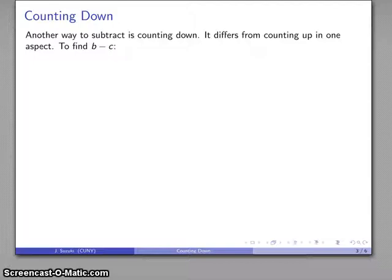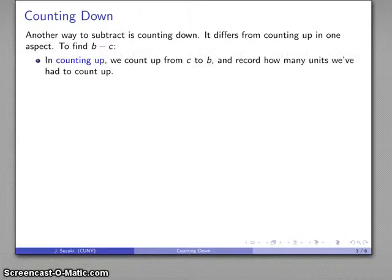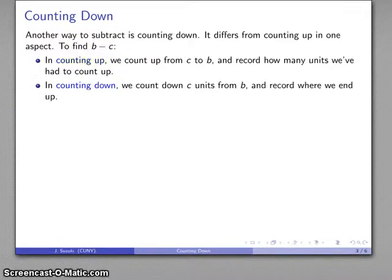Counting down is another way to subtract, and the main difference from counting up is that to find B minus C, if I'm counting up, I want to count up from C to B and see how far I've gone. If I'm counting down, I want to count down from B down C units and record where I end up.